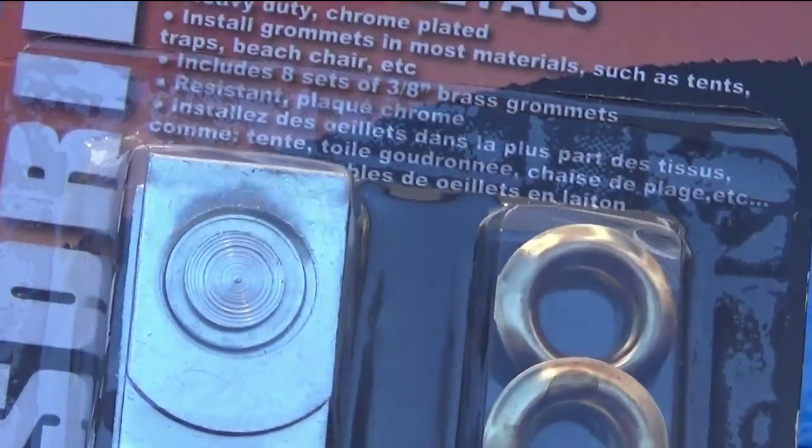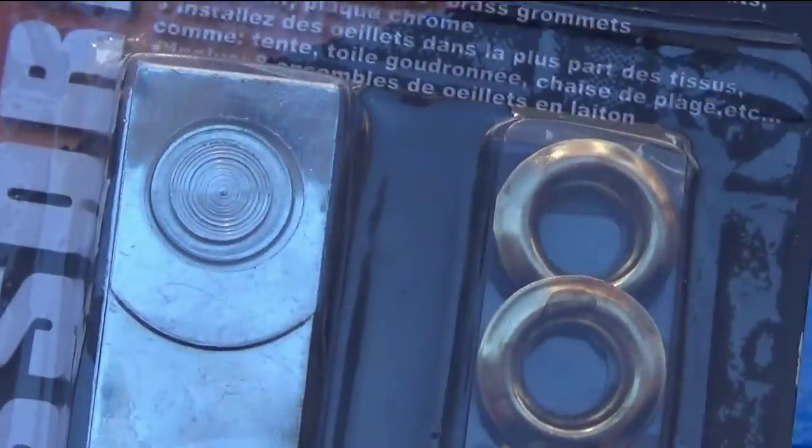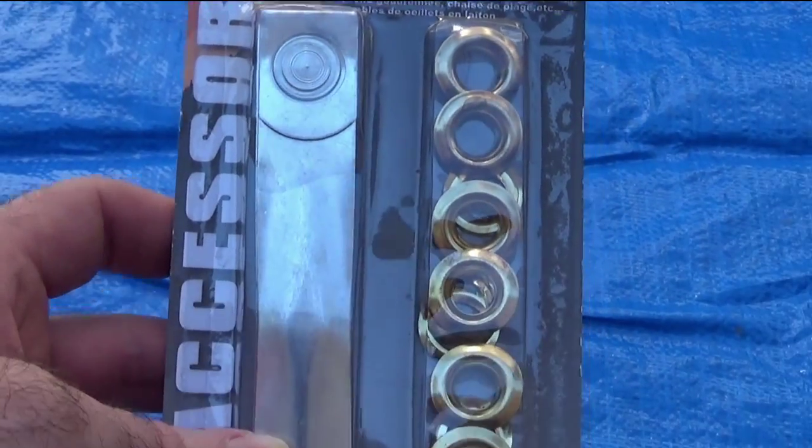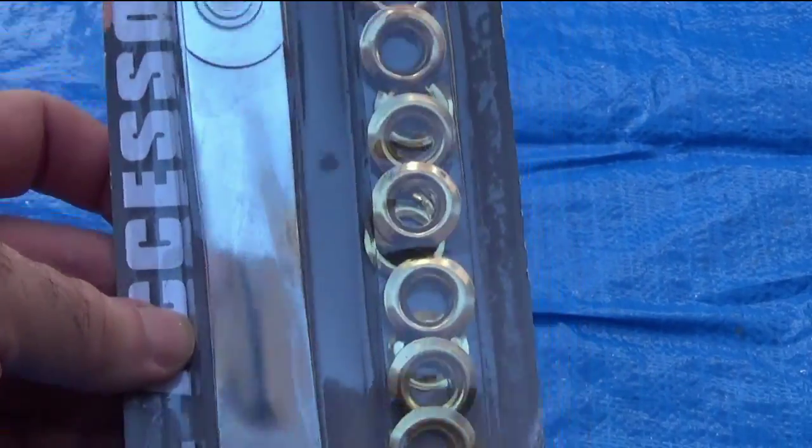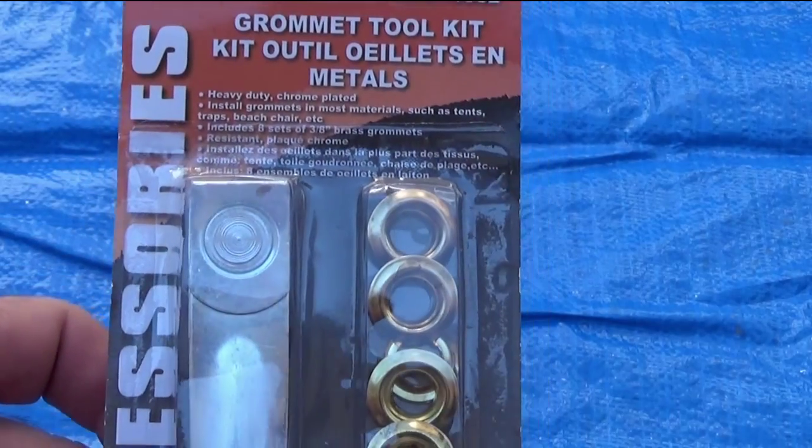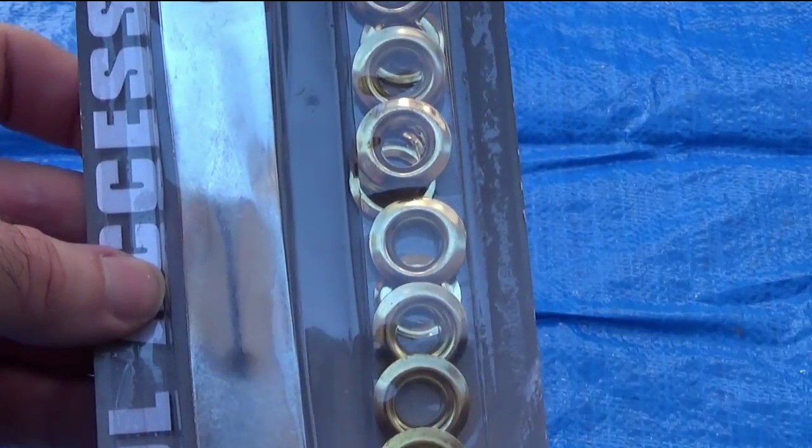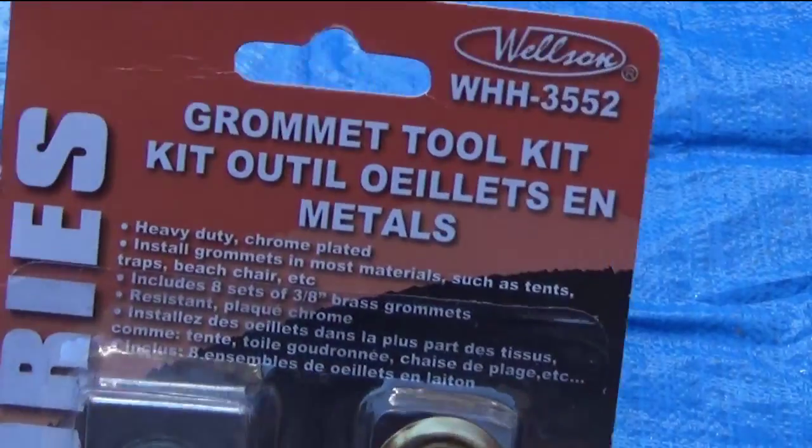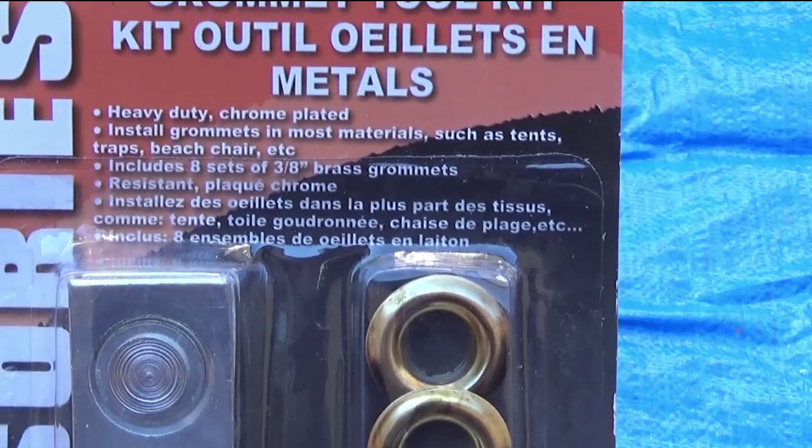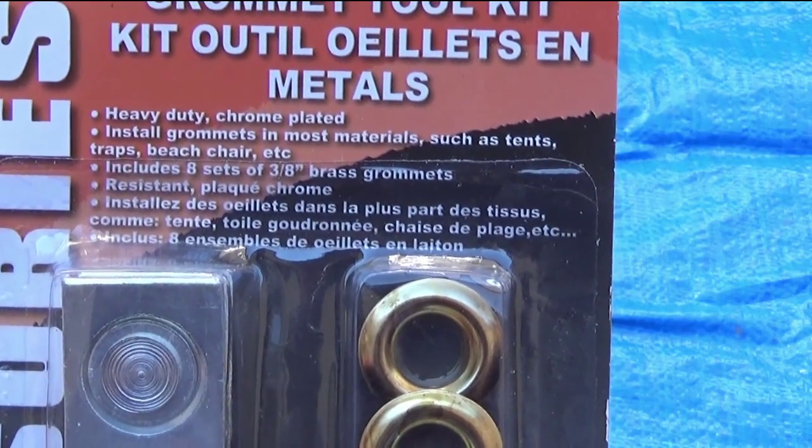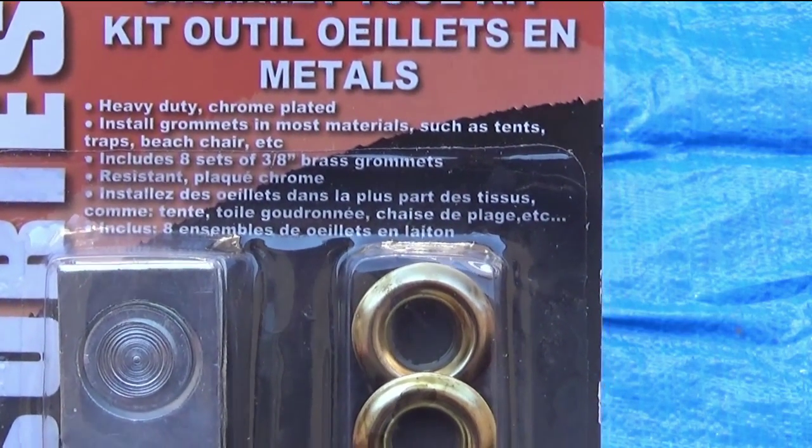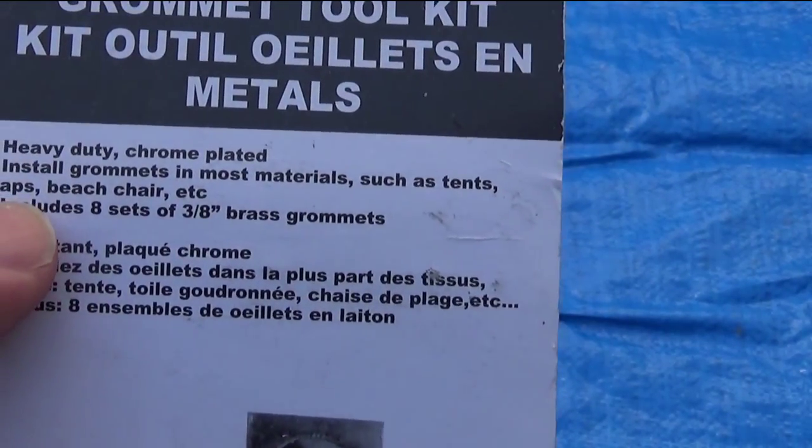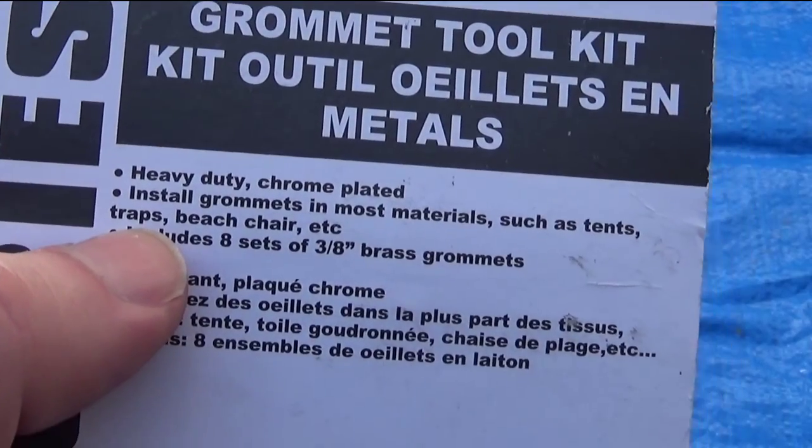Okay you can see this here, I'm going to widen the shot out a little bit for everybody. There we go, that is the tool that supposedly will do a good job of putting the grommets which are on this side into the tarp. It says right on the back, well it says heavy duty chrome plated, says that on the front as well. Install grommets in most materials such as tents, it says traps on the front, beach chairs etc. It says traps on the back too, you shouldn't say tarps on at least one of them you'd think.